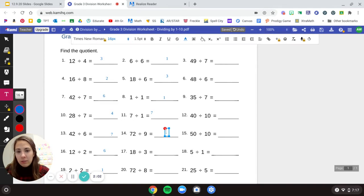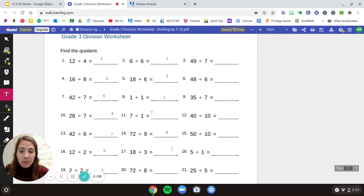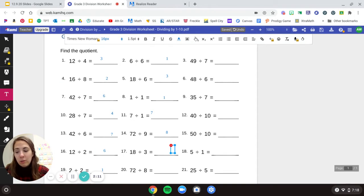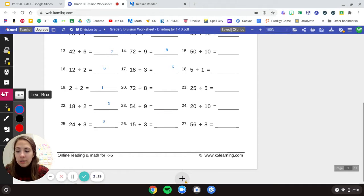72 divided by 9 is 8, because if we do 9 times 8, we get to 72. 18 divided by 3 is 6. I'll scroll down a little bit. All right, and we got 72 divided by 8, and we get 9.